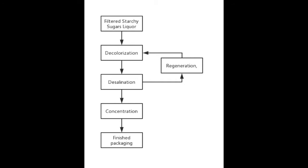The decolourization and desalting technology of starch sugars involves six steps: Step 1, filtered starchy sugars liquor; Step 2, decolourization; Step 3, desalination; Step 4, regeneration; Step 5, concentration; Step 6, finished packaging.